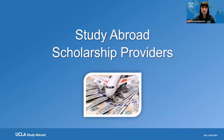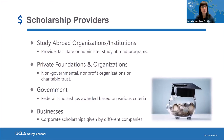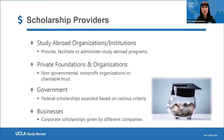Now, who are the providers of study abroad scholarships? There are four main groups. The first is study abroad organizations or institutions — entities that provide, facilitate, or administer study abroad programs. Then we have private foundations and organizations, which are non-governmental, non-profit organizations or charitable trusts. We also have the U.S. government, which has some amazing federal scholarships. And lastly, businesses — corporate scholarships given by different companies.